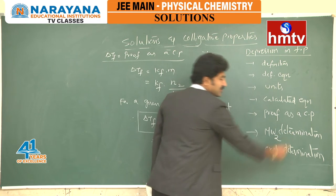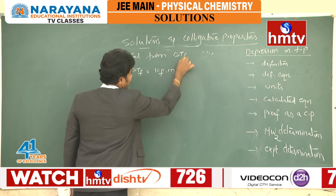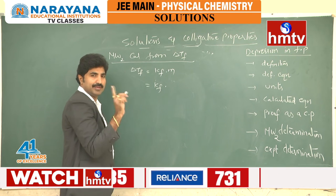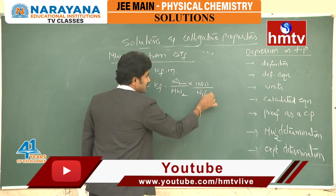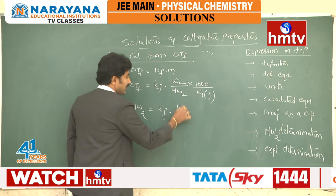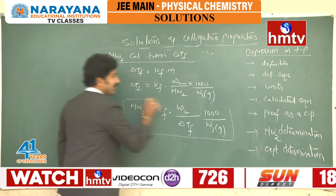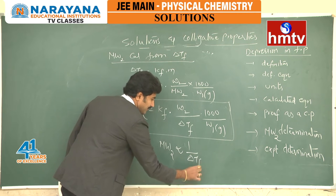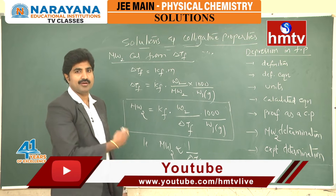Molecular weight determination of the solute from ΔTf: We know ΔTf = Kf × m = Kf × (weight of solute / molecular weight of solute) × (1000 / weight of solvent in grams). Rearranging, molecular weight of solute = Kf × W2 × 1000 / (ΔTf × W1), where W2 is the weight of solute and W1 is the weight of solvent in grams. From this relation, molecular weight is inversely proportional to the colligative property, as found in every colligative property case.